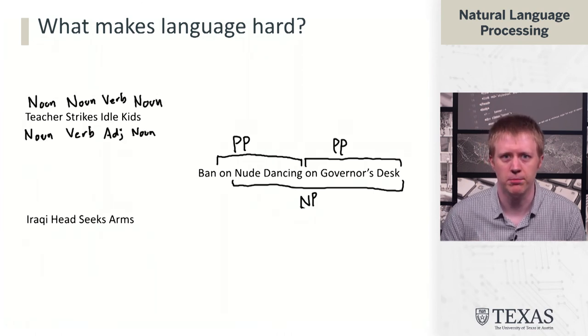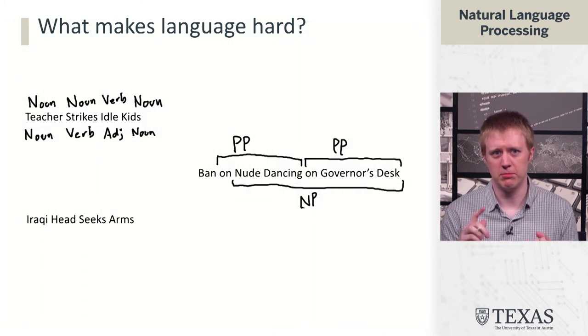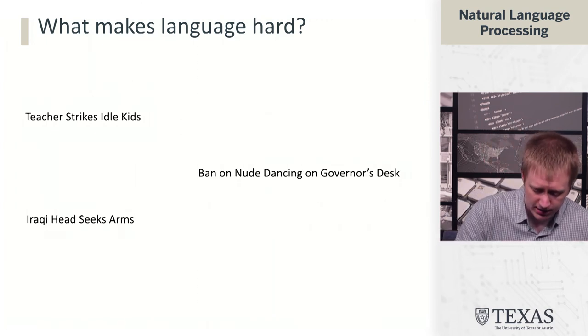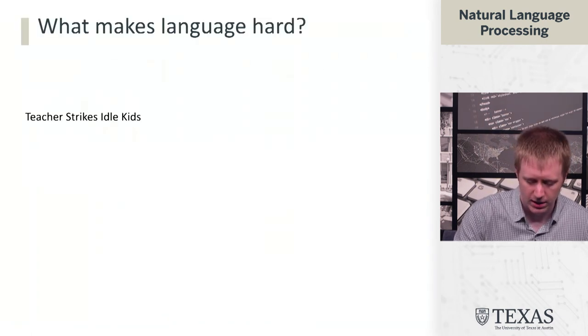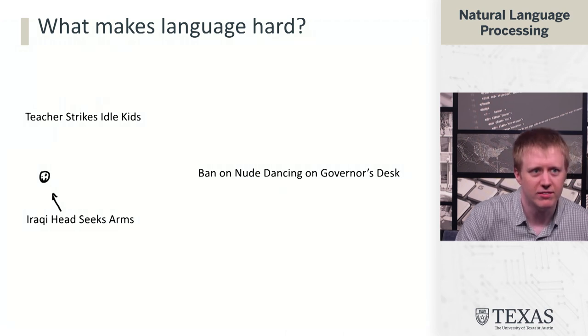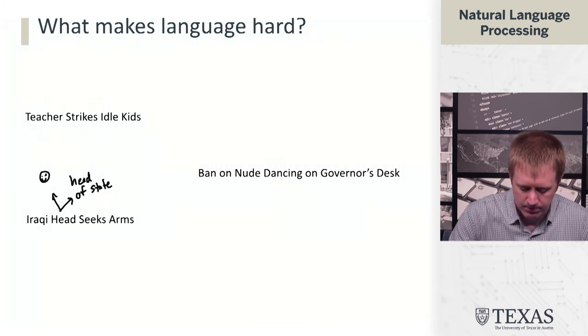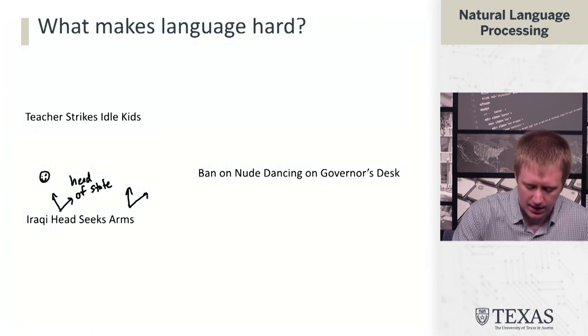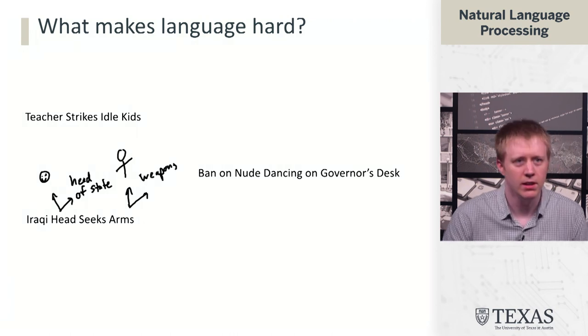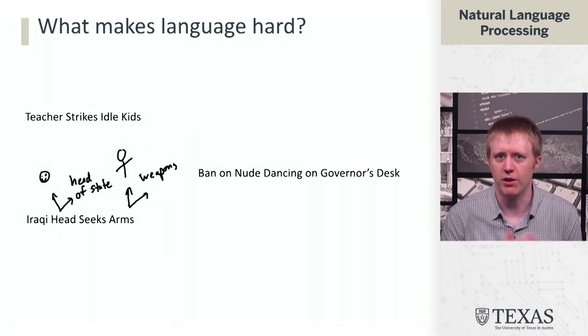Let's look at a third example: 'Iraqi head seeks arms.' Actually, in this case, we don't have either of these ambiguities. The parts of speech are totally clear, and the syntactic structure, it turns out, is clear as well. What is ambiguous is the sense of the word head. Is it someone's head, or is it like a head of state? And then similarly for arms, is it someone's arms or are we talking about weapons here? In this case, we have more of a semantic ambiguity that arises from the different senses of these words.